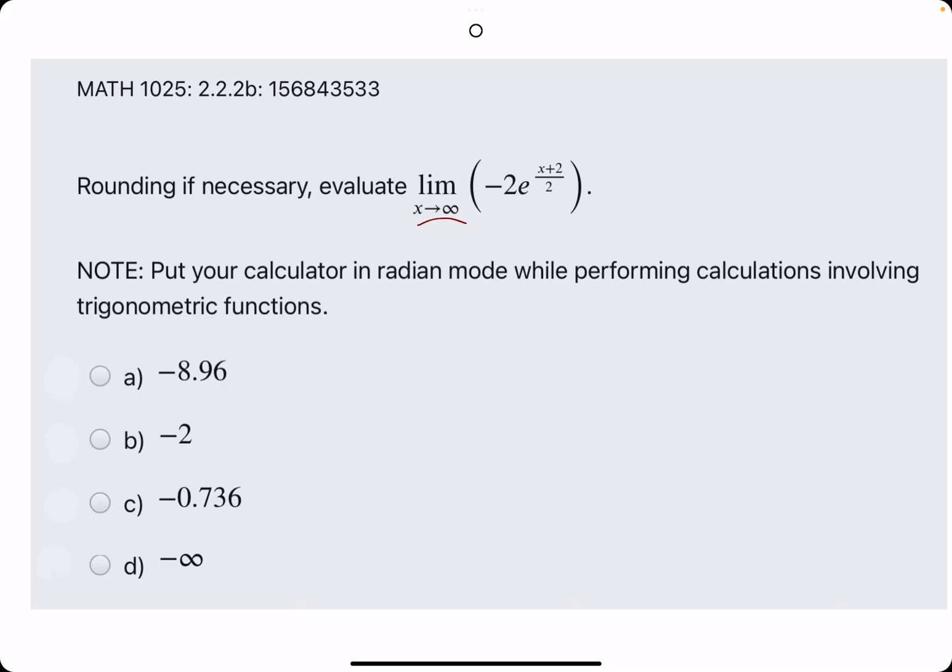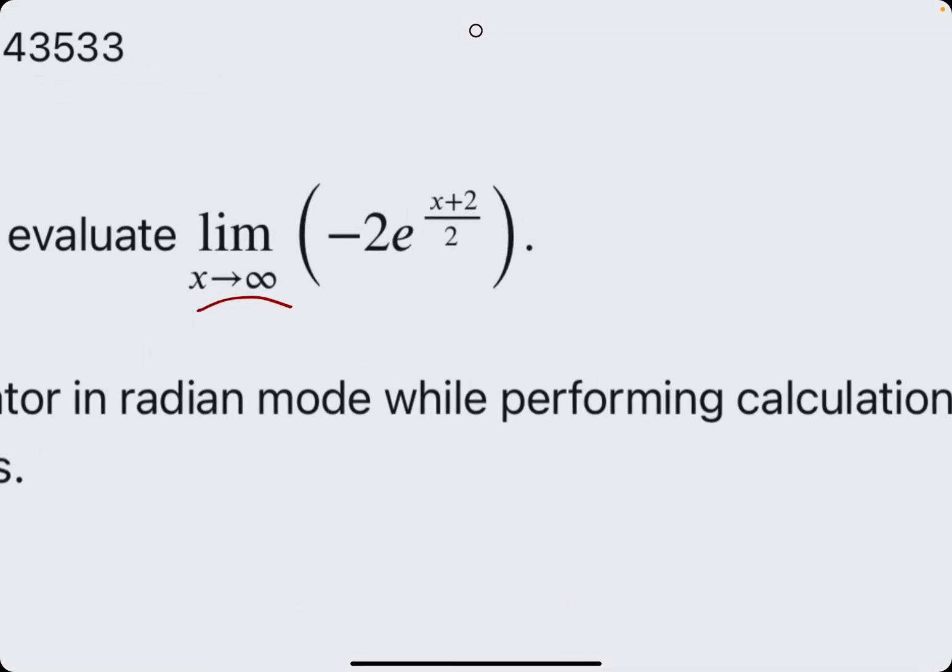So what happens when we plug in infinity here? We basically have infinity plus two over two. Well, that infinity on top pretty much overpowers everything. So infinity plus two is just infinity. Infinity divided by two is still going to be infinity because it's just infinitely large. So what we have is e raised to the infinity.